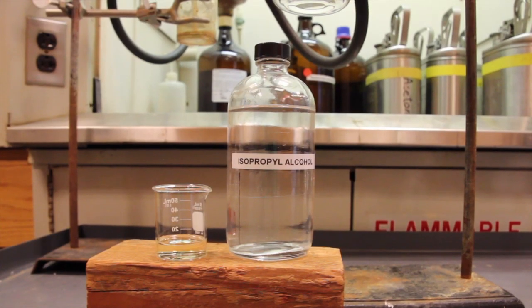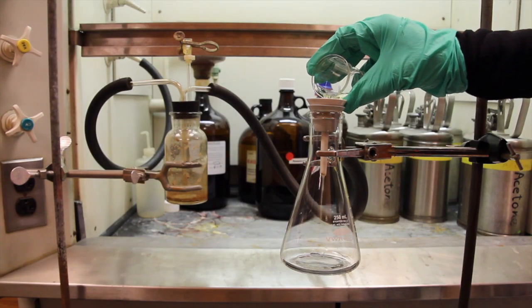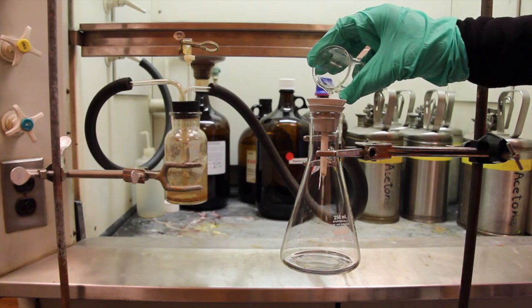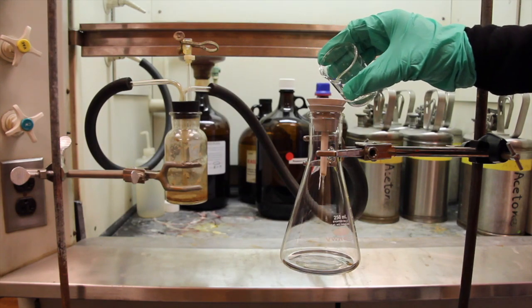Use isopropyl alcohol to recrystallize your alcohol product using a clean and tared filter flask for your vacuum filtration. Collect the crystals and let them air dry, then weigh them.